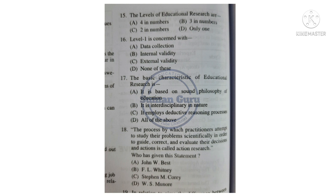Question 16: [Options about research characteristics] — Option A: Data collection. Option B: Internal Validity. Option C: External Validity. Option D: None of these. Answer is Option A: Data collection. Question 17: The basic characteristics of educational research — Option A: It is based on sound philosophy of education. Option B: It is interdisciplinary in nature. Option C: It employs directive reasoning processes. Option D: All of the above. Answer is Option D: All of the above.